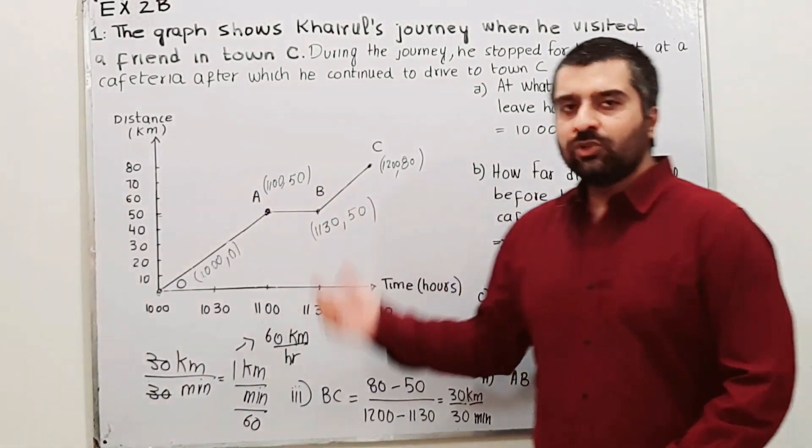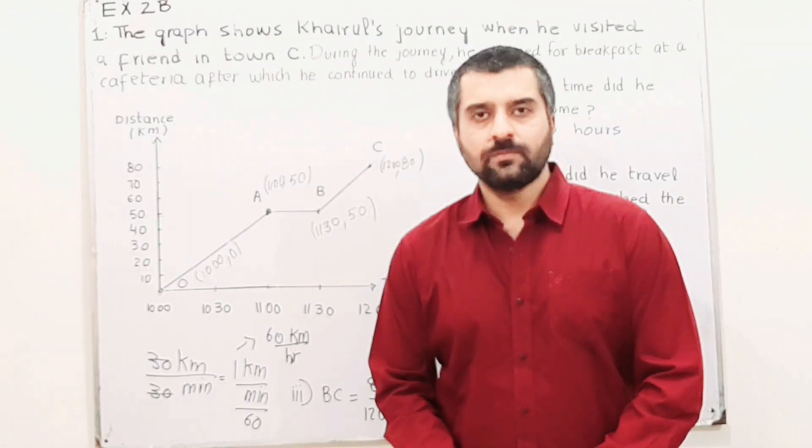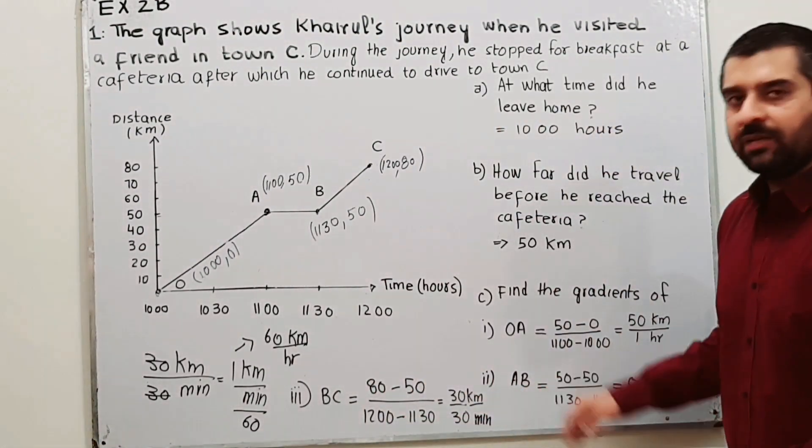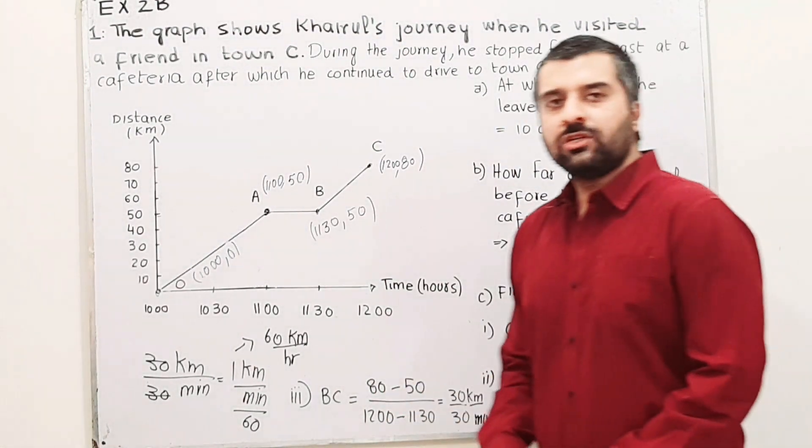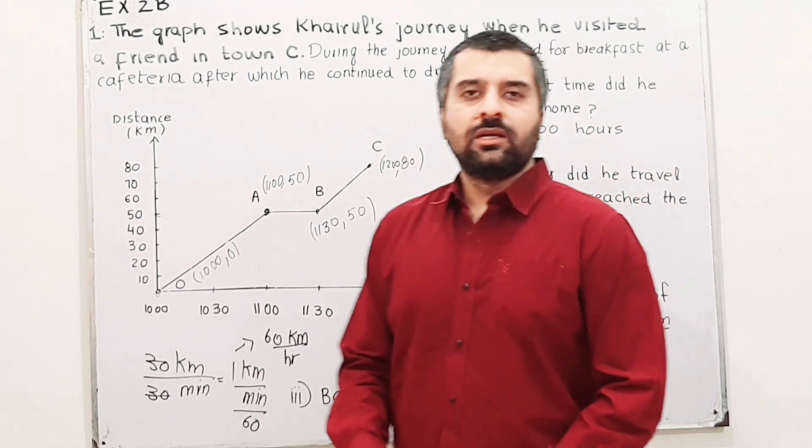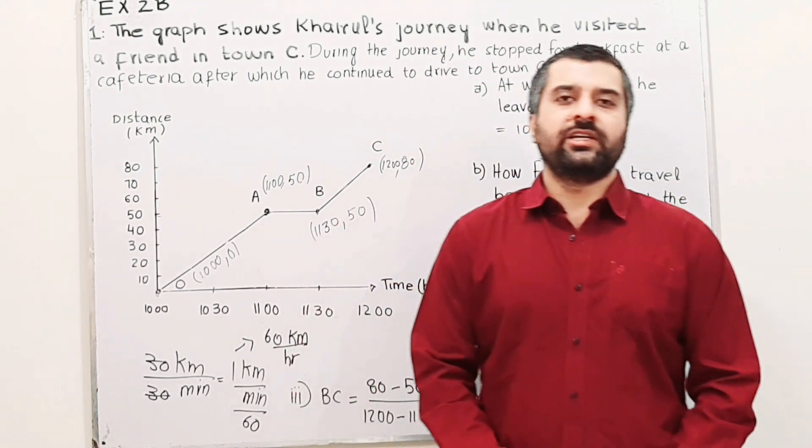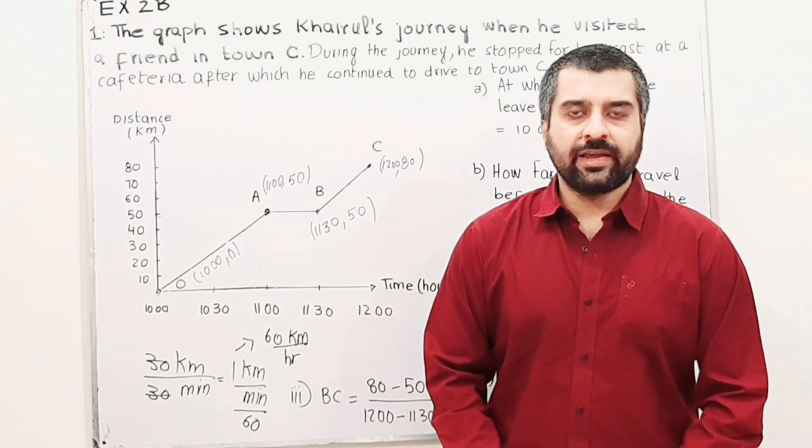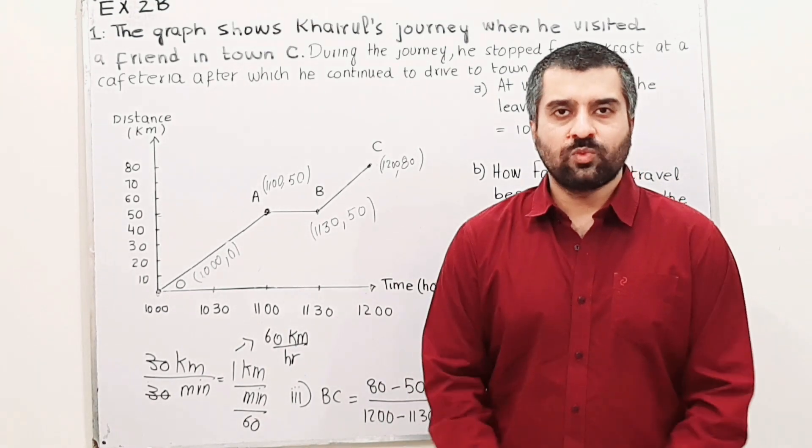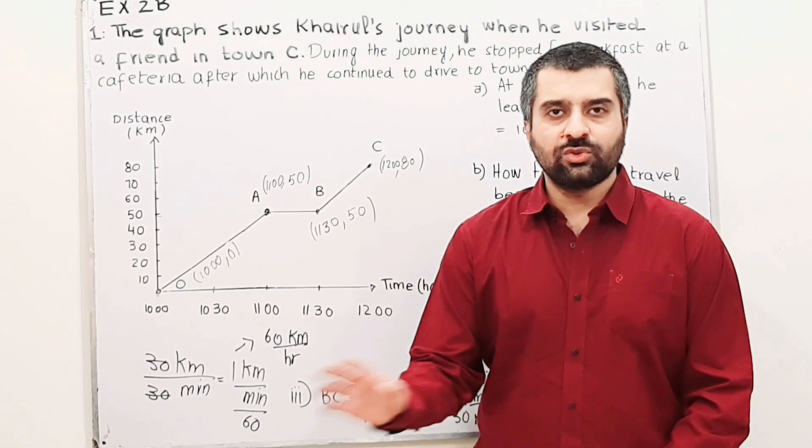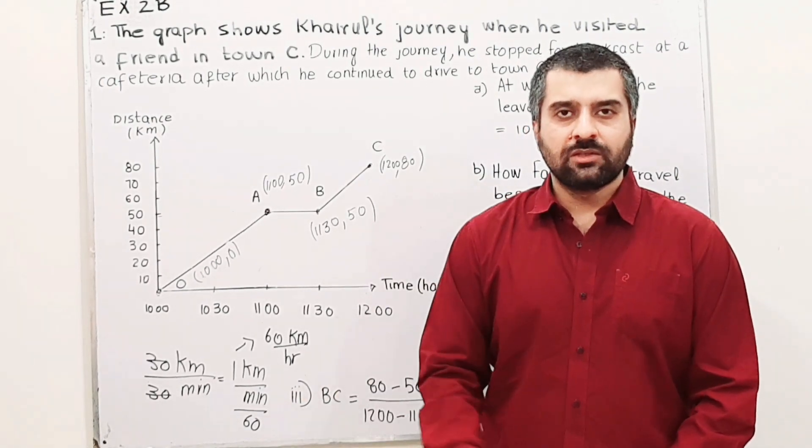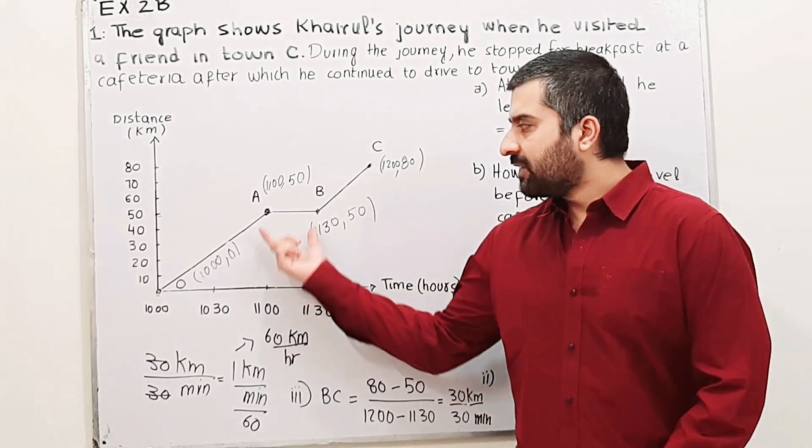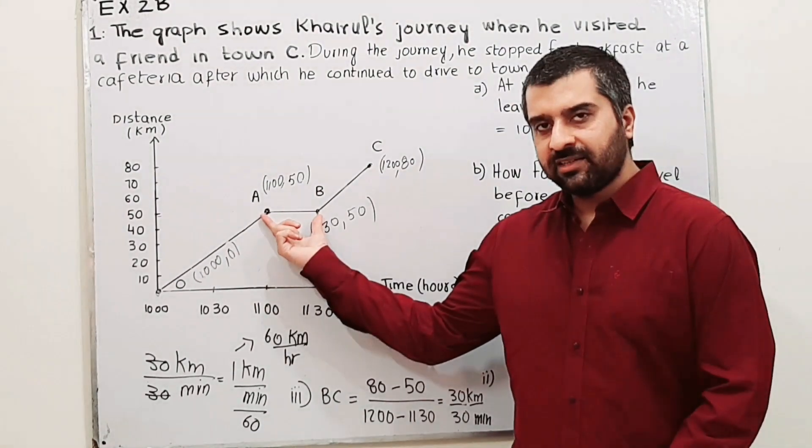What is the gradient from A to B? Find gradient of AB. This is a horizontal line. There is no change in y. When there is no change in y, we have zero gradient, because gradient is change in y divided by change in x. Gradient is zero, that means the speed is zero. We are at rest. This section shows that he is at rest at the cafeteria.